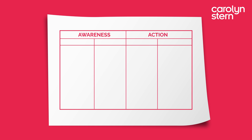In the first column write 'Emotion,' in the second column write 'Trigger,' in the third column write 'Response,' and in the fourth column write 'Impact.' Using the scenario above, let's write out the situation by breaking down the components in this chart.